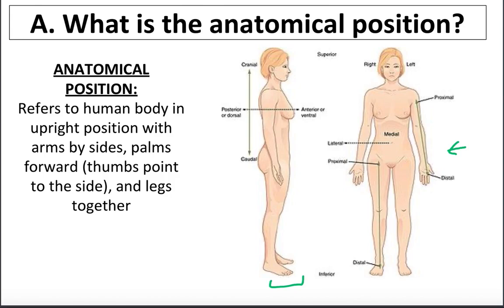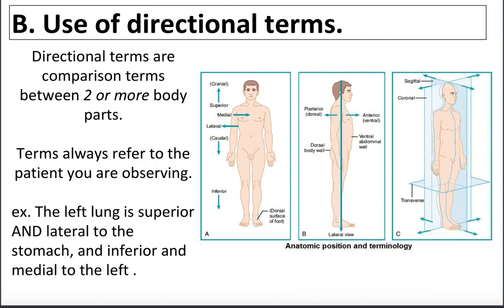Another thing about the anatomical position is left and right. A lot of students freak out and ask why left is on their right. But I don't care about the doctor — I care about the patient. So if this person in the picture is the patient, you as a doctor or nurse identify the patient's left and right according to them, not according to your own vision. That's an example of anatomical position according to the patient standing in the position.